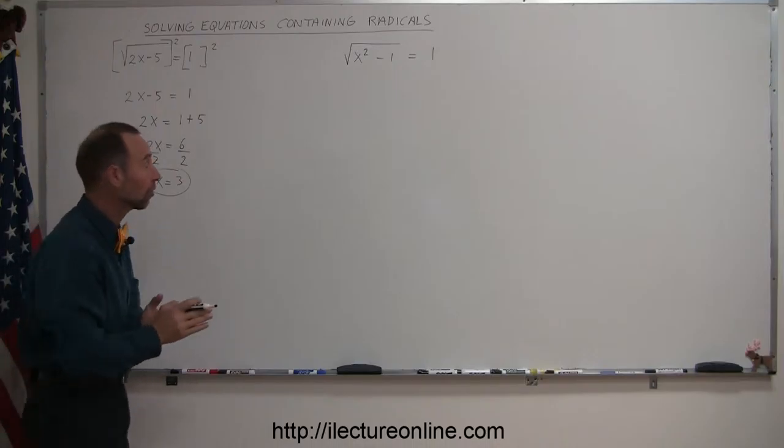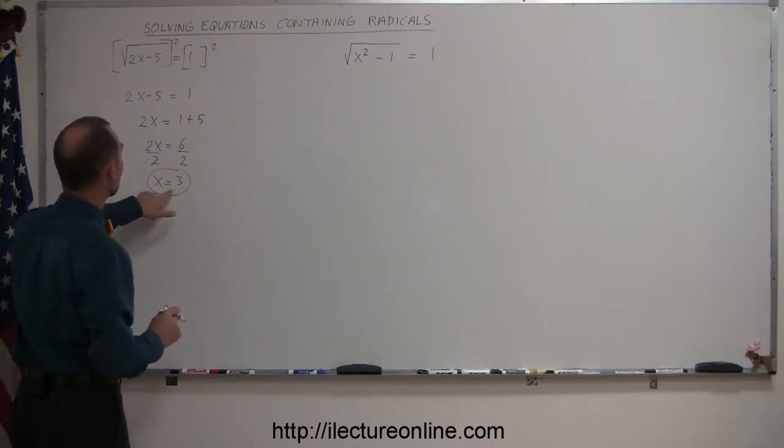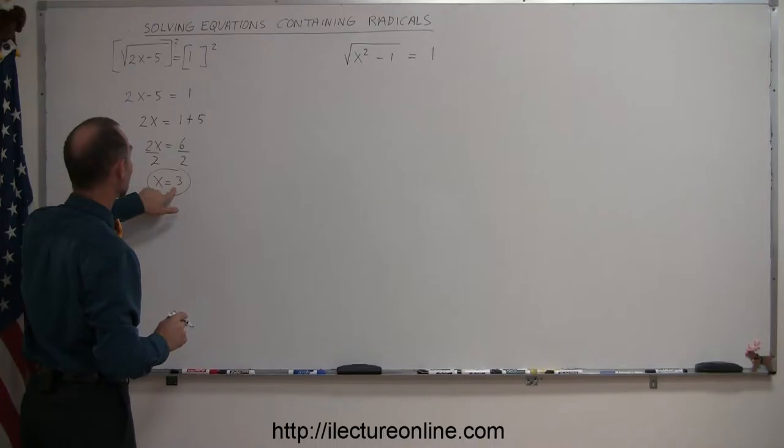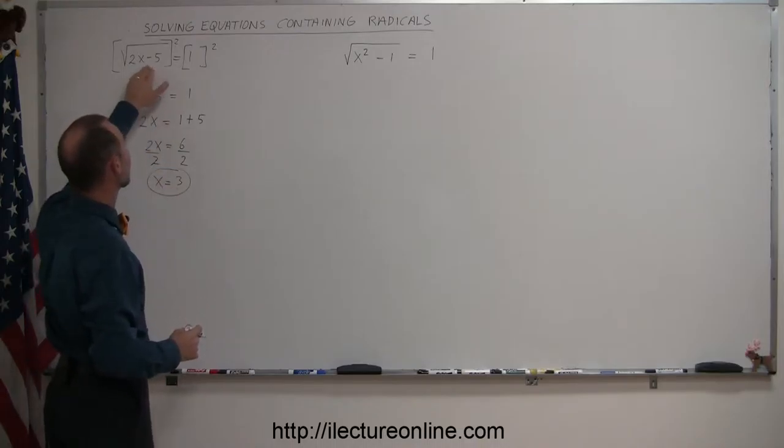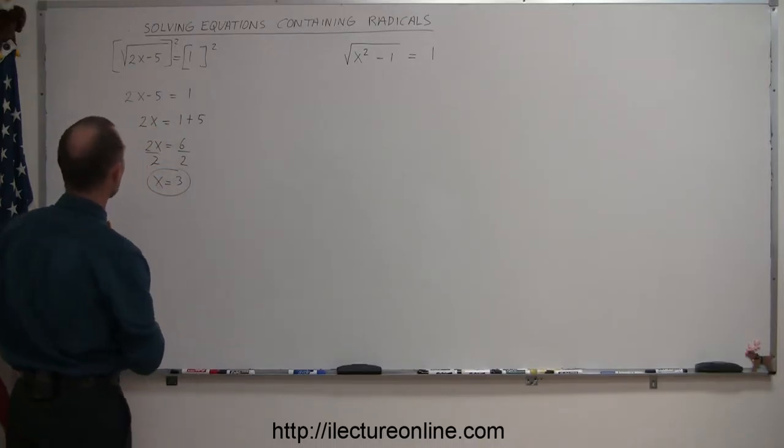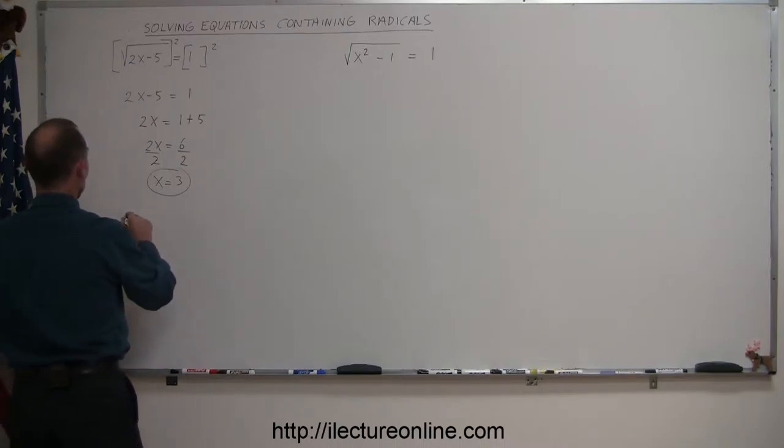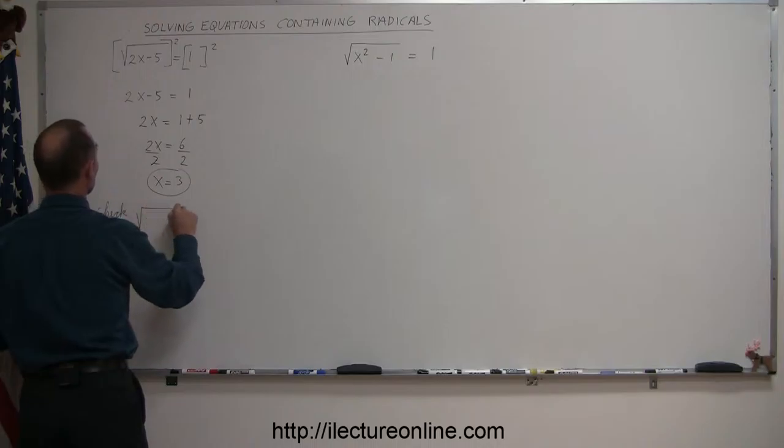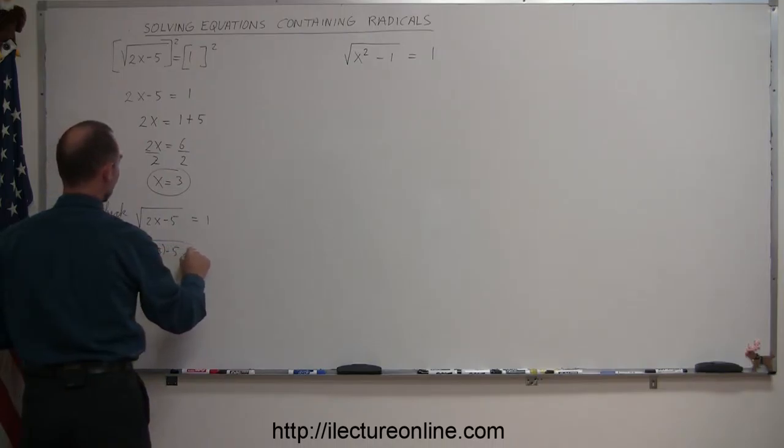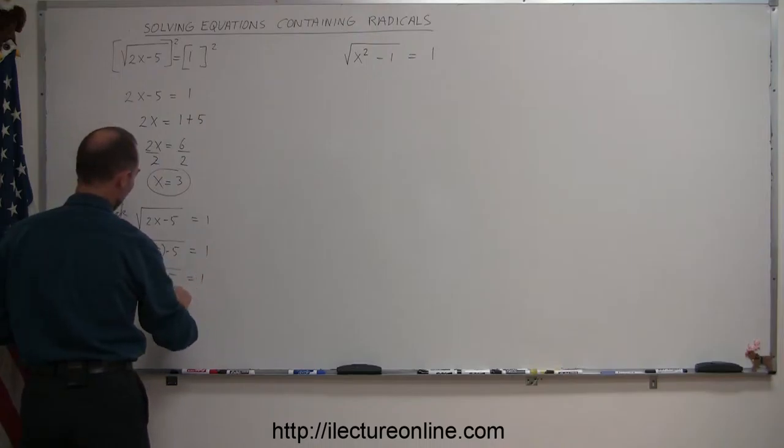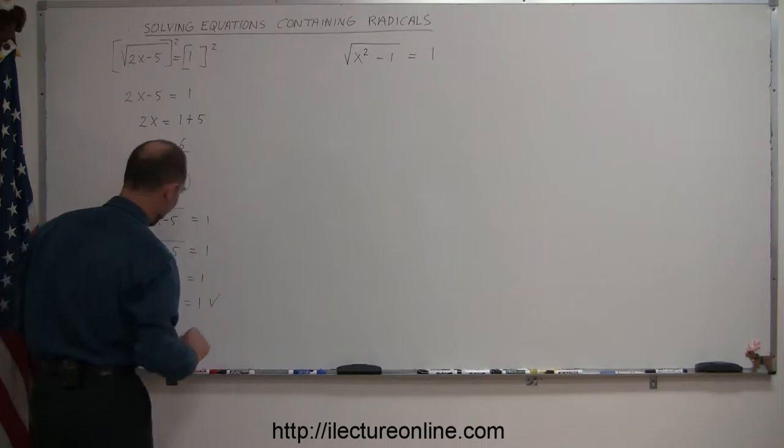Now, before you know for sure that's the solution, it's always a good idea to plug the value that you have for the solution back in the original equation to make sure that this does not cause any problems. So, we're going to do a check. We had the equation, the square root of 2x minus 5 is equal to 1. We plug in 3 for x, so we have the square root of 2 times 3 minus 5 equals 1, or the square root of 6 minus 5 equals 1, or the square root of 1 equals 1, which of course is correct.